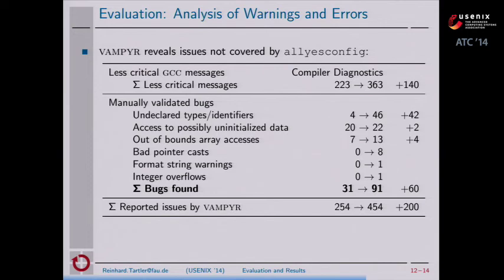We also took a closer look at what kinds of errors we see with this approach. Most of the diagnostics are probably false positives, which we skipped. However, from the remaining 91 messages, we validated them and believe these are really serious bugs that kernel developers should look at. We are seeing undeclared types and identifiers in code, a significant increase in access to possibly uninitialized data, even format string warnings, and a buffer overflow.